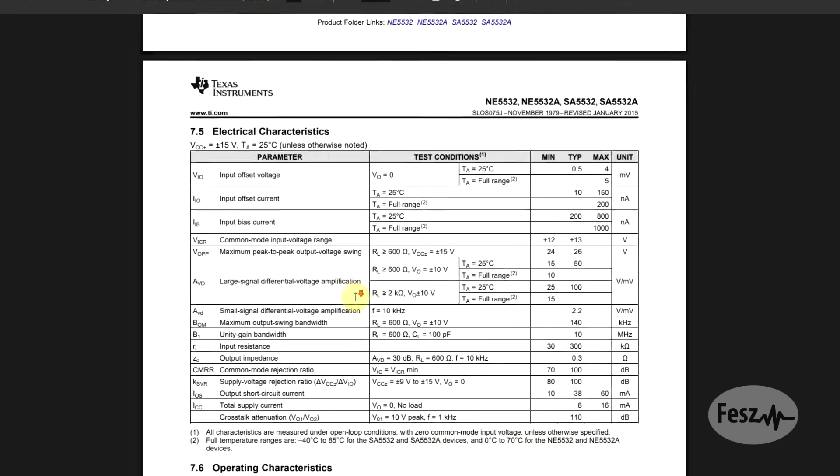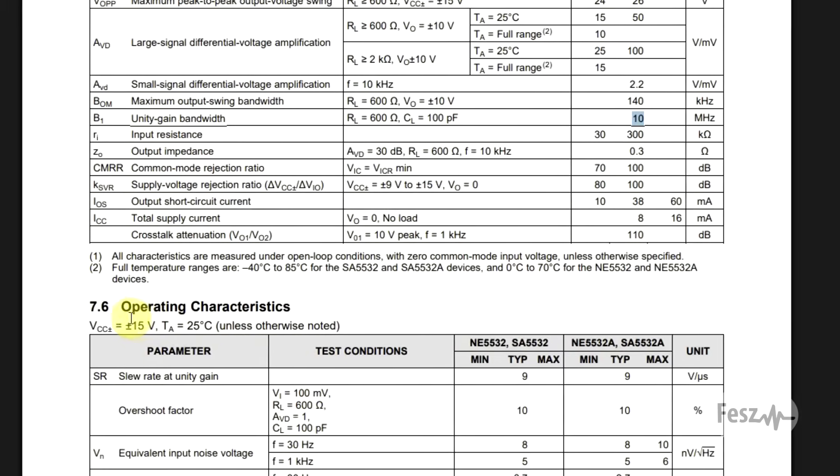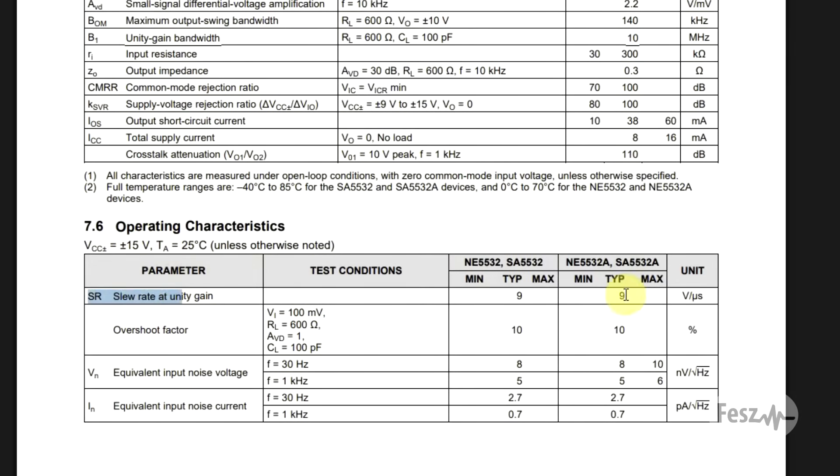The main parameters of interest today are found if we scroll down a bit. So here in the electrical characteristics table, we have the unity gain bandwidth, set at 10MHz, and a bit lower, we have the slew rate, which is 9V per microsecond.